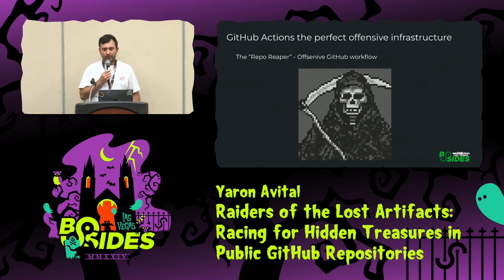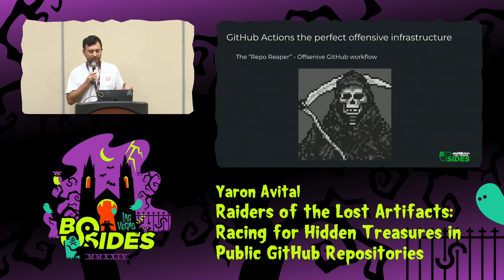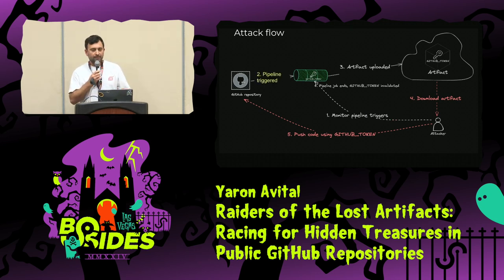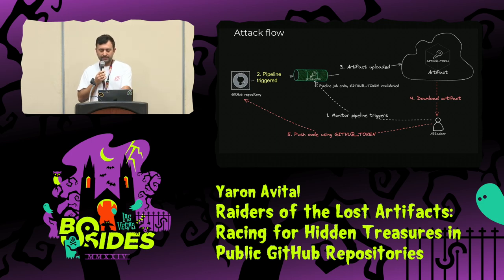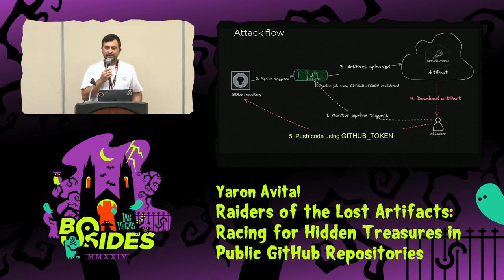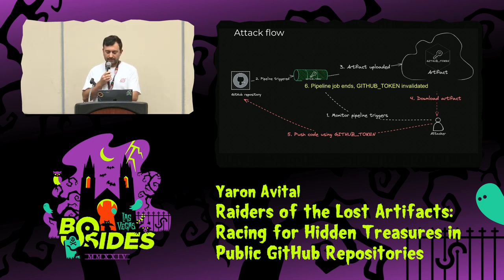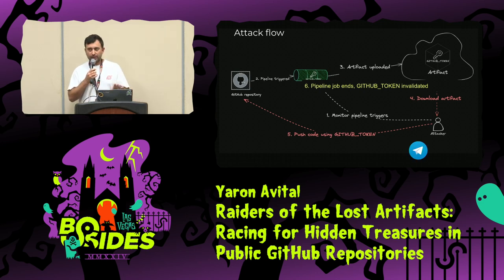I wrote an offensive GitHub workflow — I present the 'repo-repo.' All I needed to do is point it towards a potential target repo and wait for results. This is the attack flow: monitor pipeline triggering — a contributor pushing code or a nightly build — the pipeline uploads the artifact, I download the artifact, use the GitHub token to create a branch, and by the time the job ends and the token is invalidated, I've already used it. As a bonus, since this was fully automated, I sent a Telegram message to myself so I'd know when something happened.